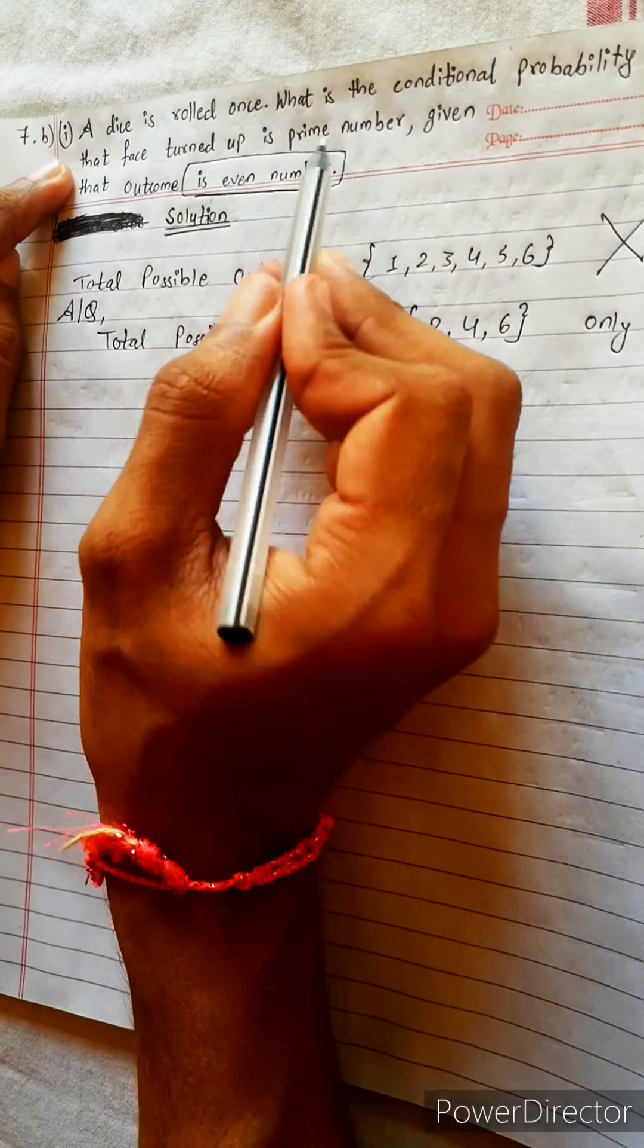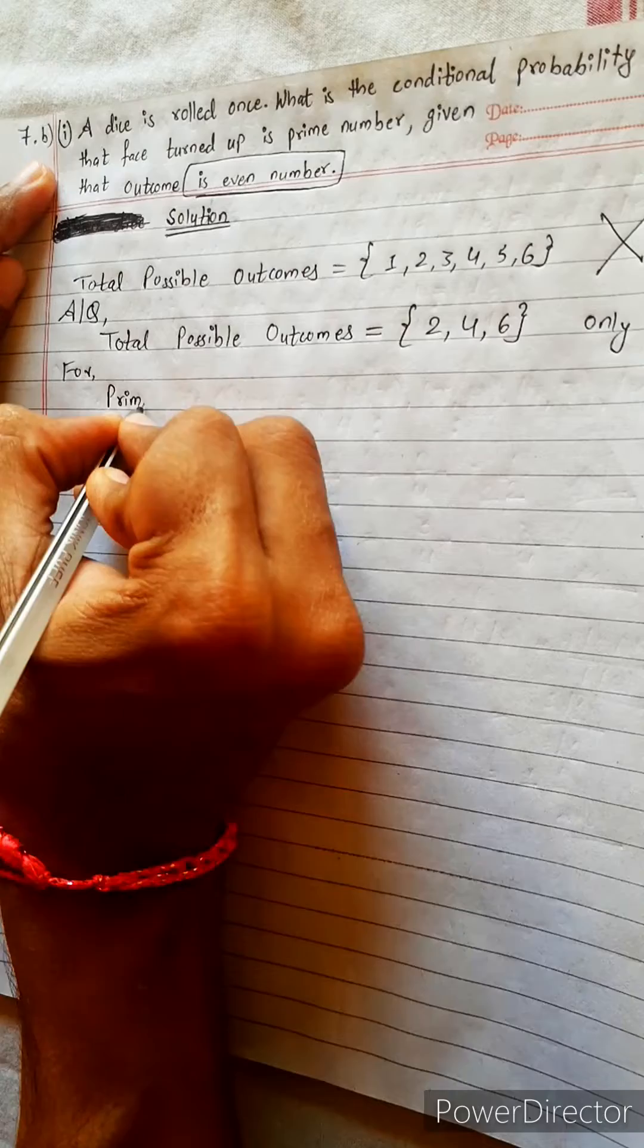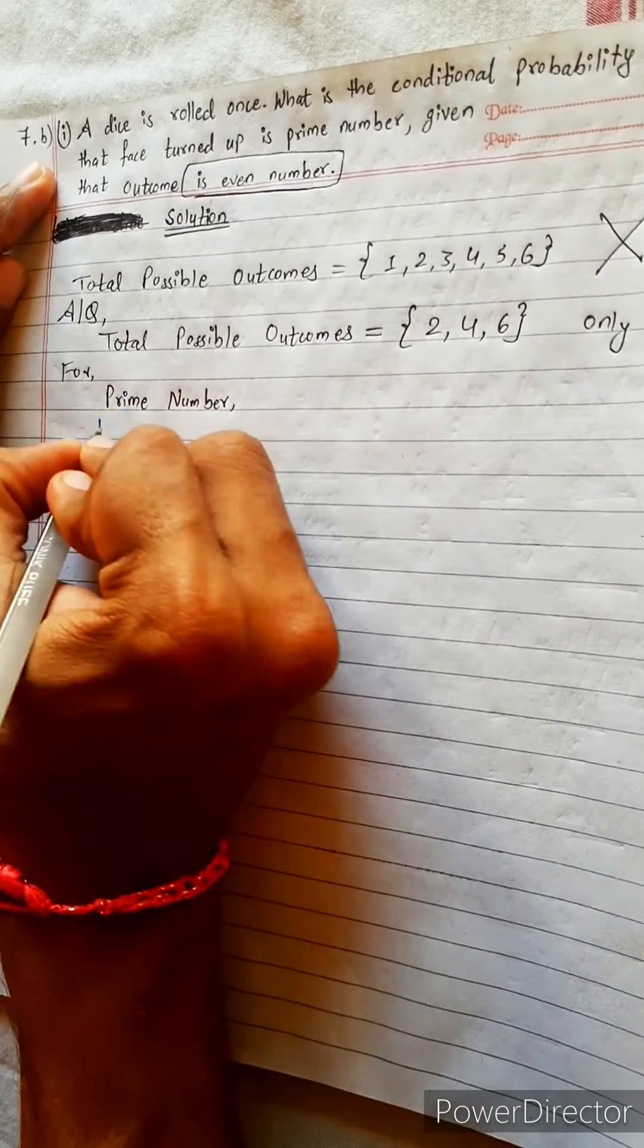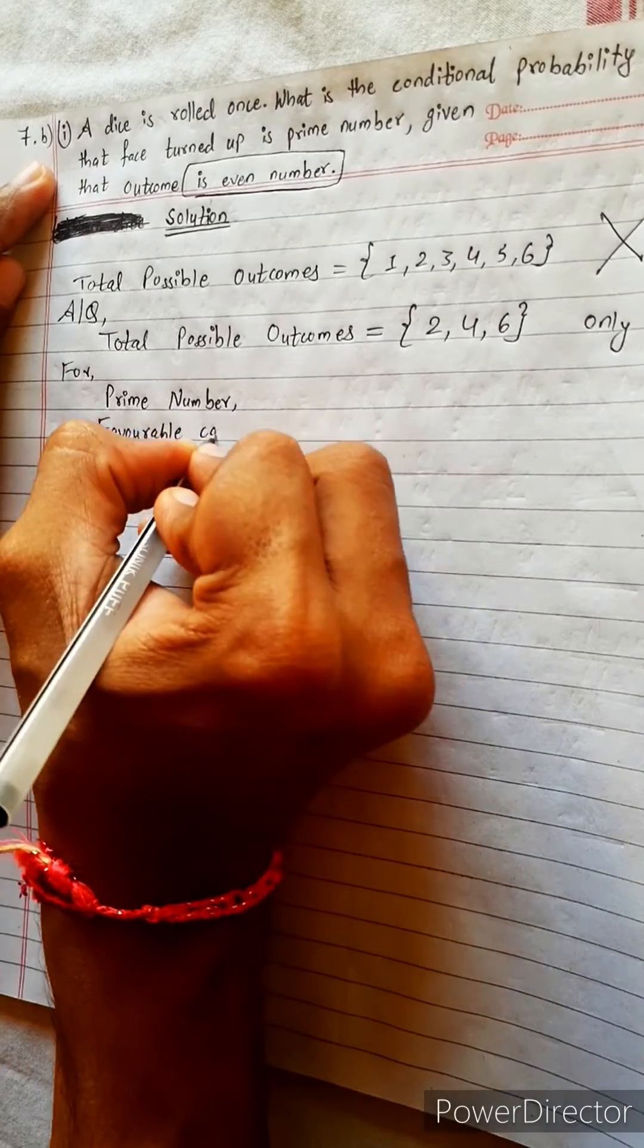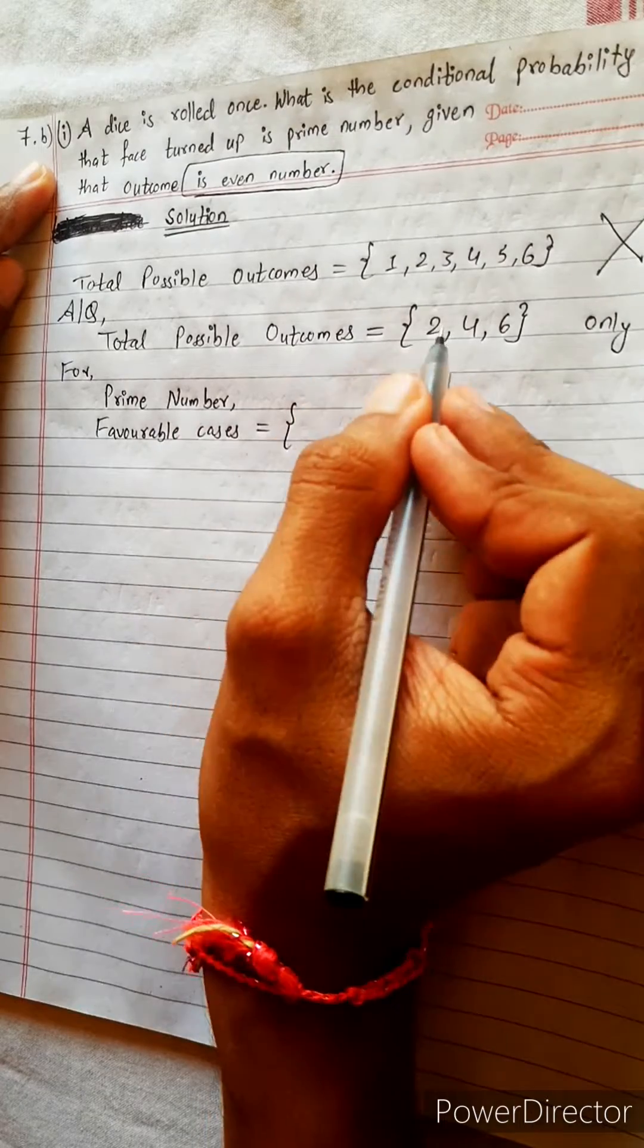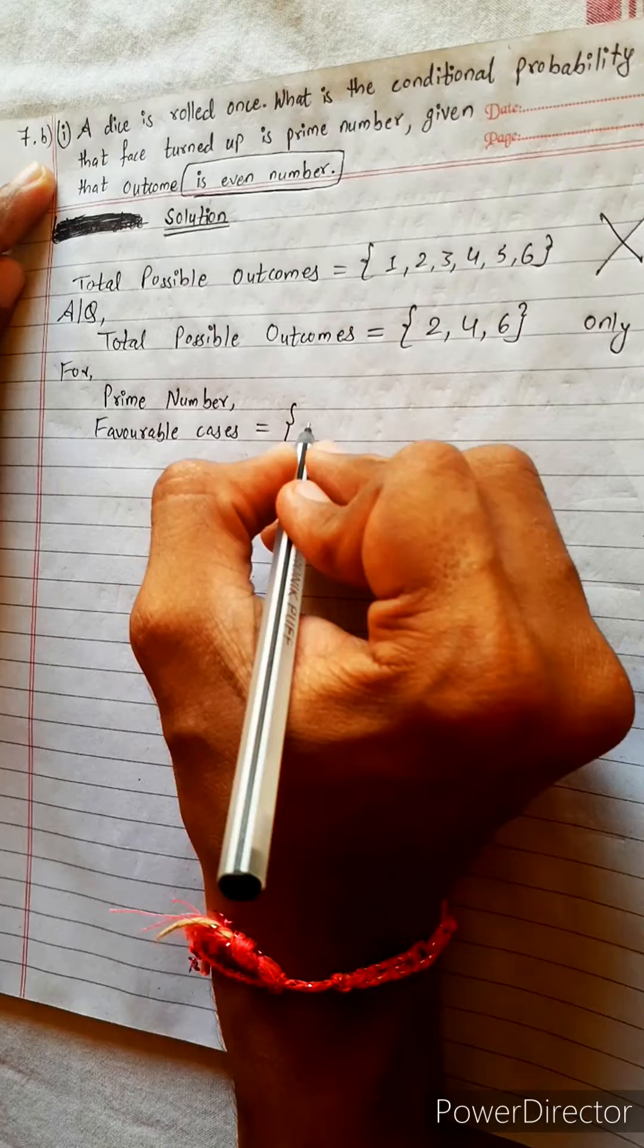For probabilities, we need prime numbers. For prime numbers, favorable cases are those divisible by the same number and 1. 4 is composite, 6 is also composite. Only 2 is a prime number, so 2.